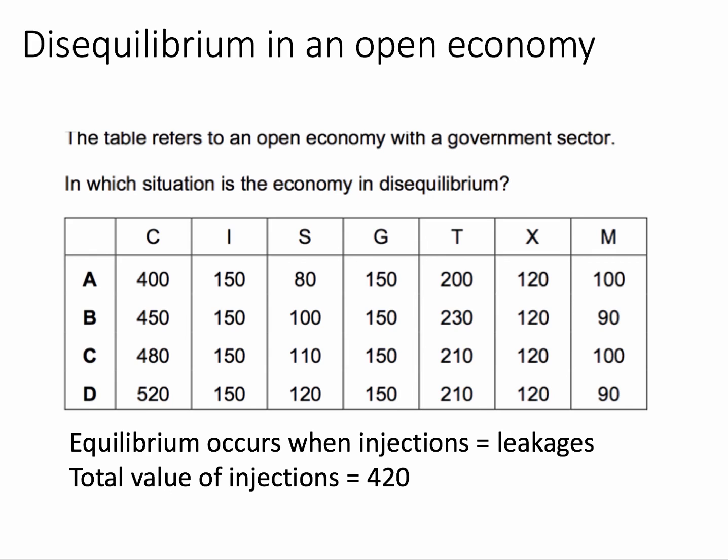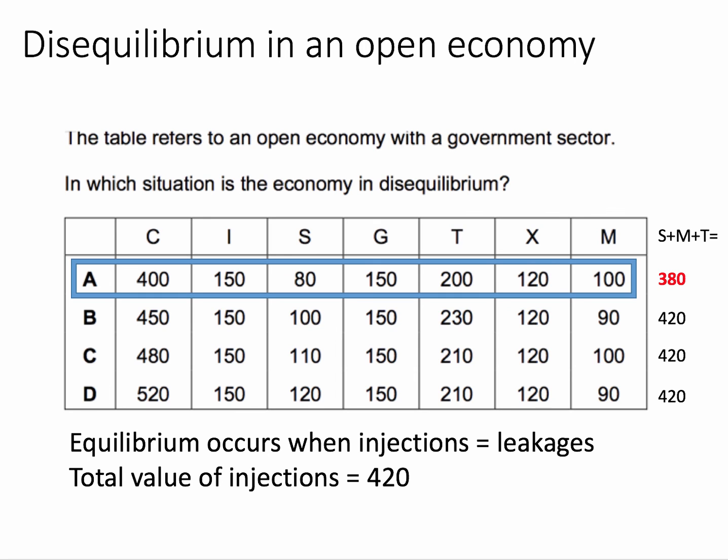So we're looking for a level of leakages which is different to 420. The three leakages are savings, tax, and imports — ignore consumption. When we add them together, we find that option A is where leakages are 380, whereas for the other options B, C, and D, total leakages are indeed equal to 420, which of course is an equilibrium concept.